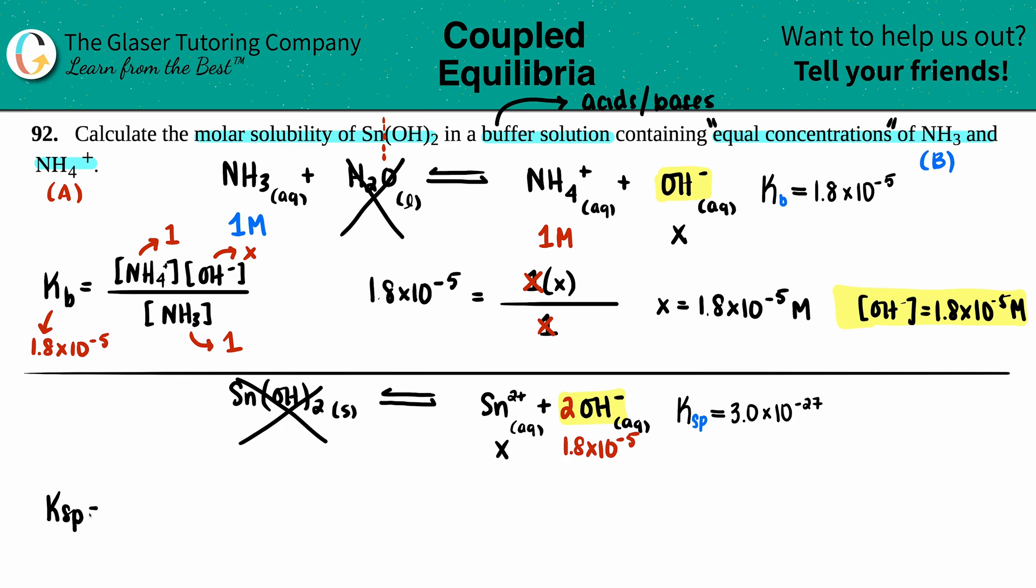Let's write out the Ksp equation. Ksp equals concentration of just the products, because solids are not allowed. It'd be Sn2+ times OH-, but since there's a 2 here, I have to raise that value to the 2.